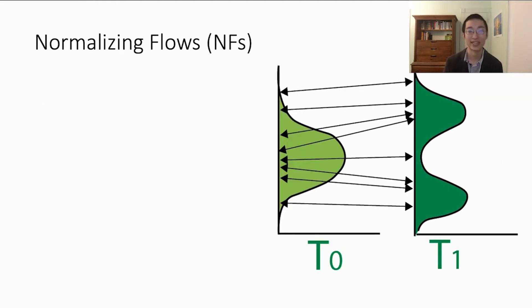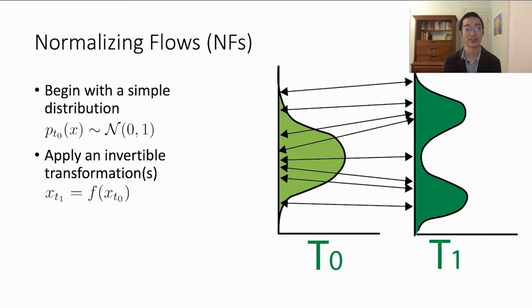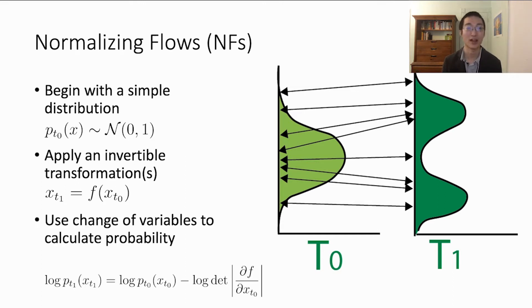First, before we get into continuous normalizing flows, a little bit about standard normalizing flows. Normalizing flows transform a very simple distribution, often the standard Gaussian distribution, into a more useful one with an invertible neural network or a series of invertible transformations. The invertibility means that we can apply the change-of-variables formula to calculate the probability, or the log probability, of any point at time t1. This log probability can then be maximized according to maximum likelihood principle.